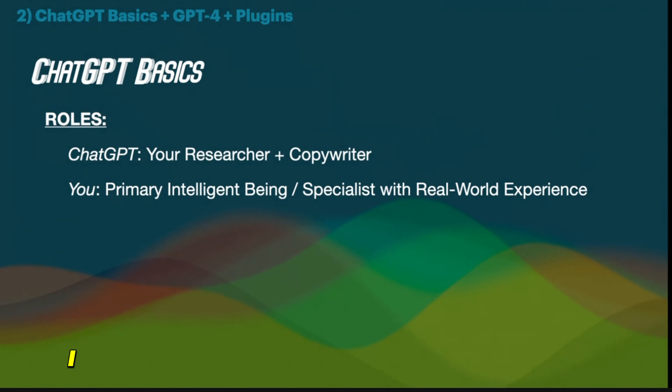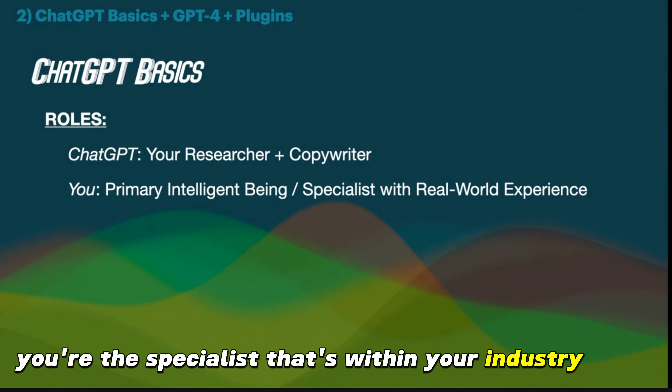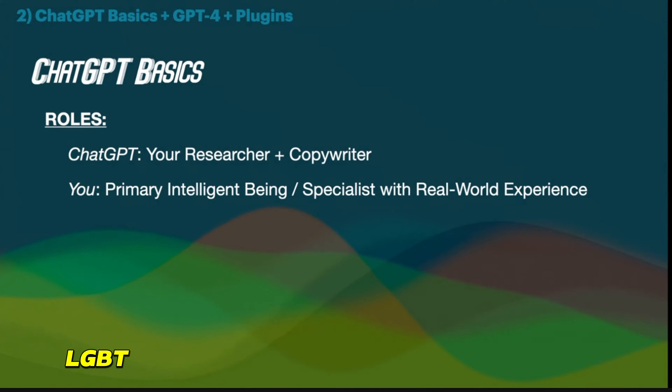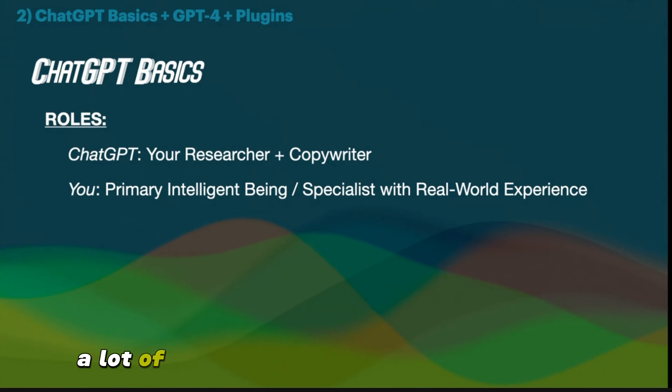Let's go over roles. ChatGPT is your researcher and copywriter — that's what it's really, really good at. Your role? You're the primary intelligent being, the specialist within your industry with years, decades of experience. ChatGPT helps by taking a lot of the writing, researching, and many of the menial tasks and doing them for you. Instead of spending two hours doing research and building a plan, you can cut that down to about 20 to 30 minutes and get the same or even better results.